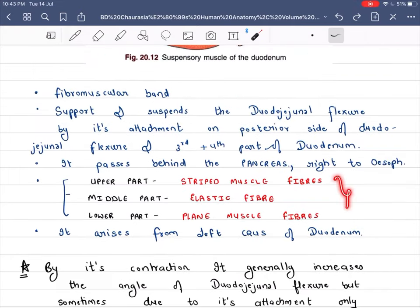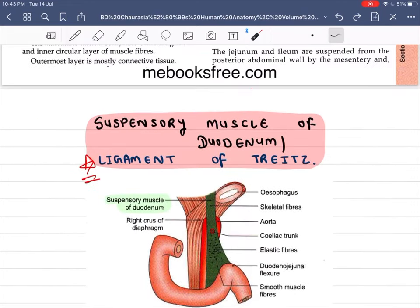Now what happens: the upper part is made from the striped muscles, the middle part is made from the elastic fibers, and the lower part is made from the plain muscle fibers. And that point which I have told you, it arises from the left crus of diaphragm. So this was our ligament of Treitz. Next video we will see Meckel's diverticulum. Thank you.